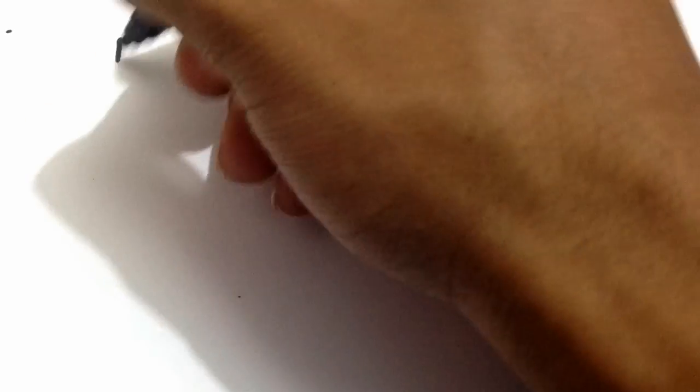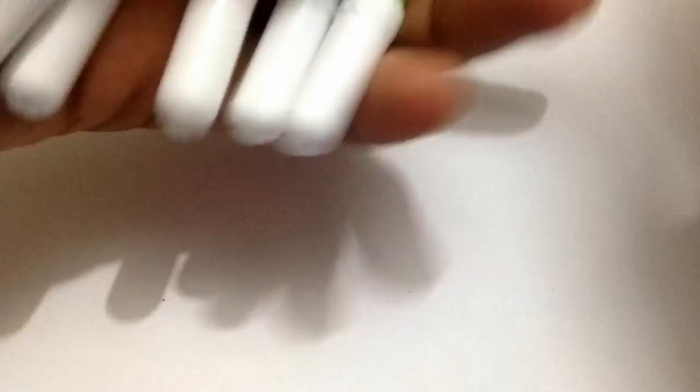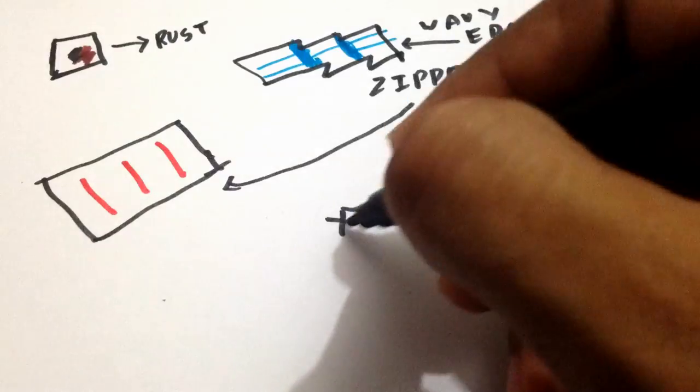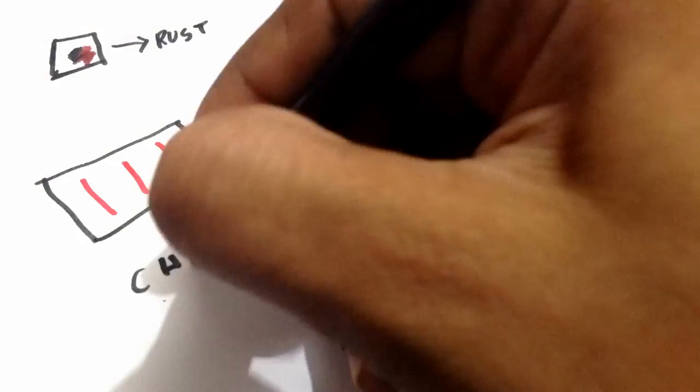Last comes defects in rolled parts. First, surface defects which occur due to scale, rust, cracks, etc. This can be remedied by proper material preparation. Second, internal structure defects which occur due to design constraints and result in the formation of wavy edges or zipper cracks. These can be remedied by adjusting the rollers to get even rolling on the billet.